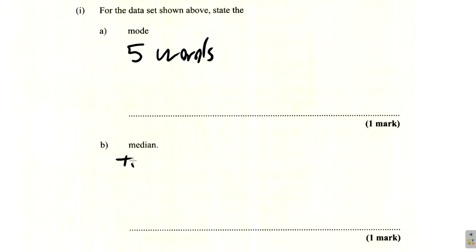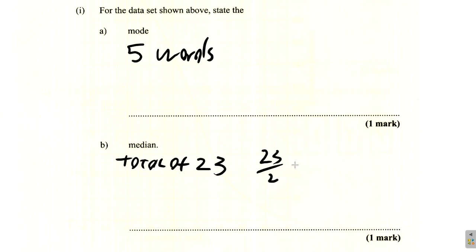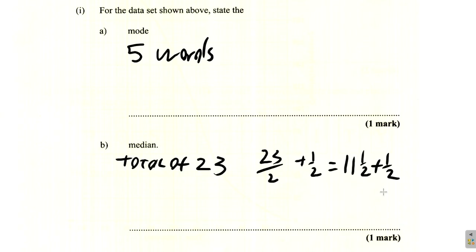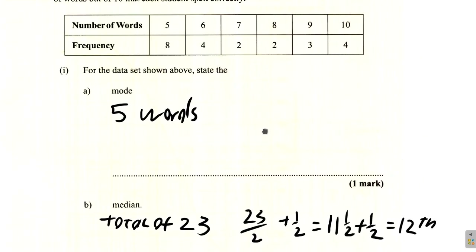There is a total of 23 occurrences. To find the middle, you say 23 divided by 2, which gives 11 and a half, then add half to it. Anytime you have an odd number of items and you want to find the one in the middle, you divide by 2 then add half. 11 and a half plus half is 12. So the 12th correct word is the one that is the median.